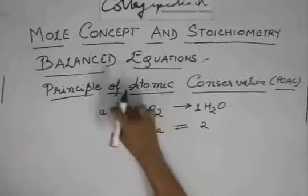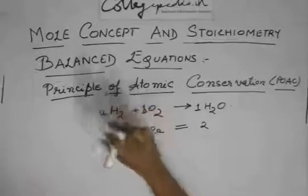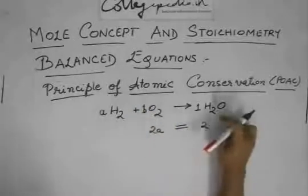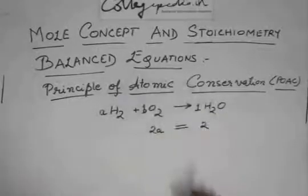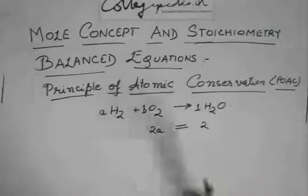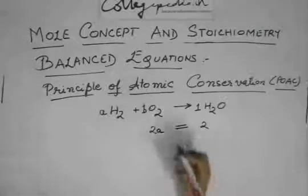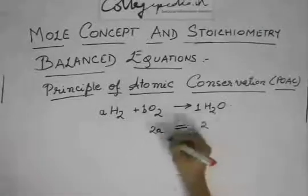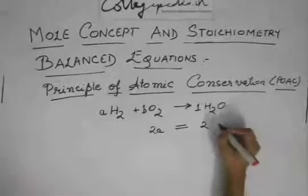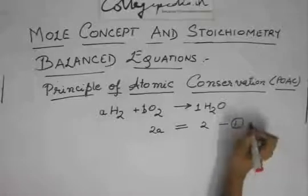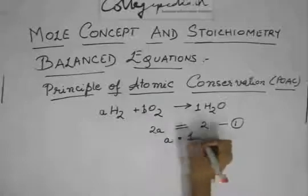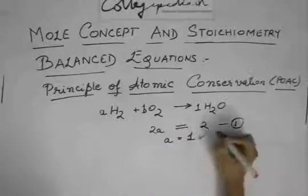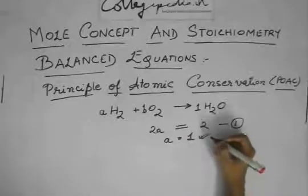So did you understand? This, the number of hydrogen atoms on the left-hand side are 2A. On the right-hand side are 2 into 1, 2. And they have to be equal because they can't go anywhere, they have to be conserved. So this, these two should be equal. So this is your first equation. And from this, you directly get the value of A as 1.